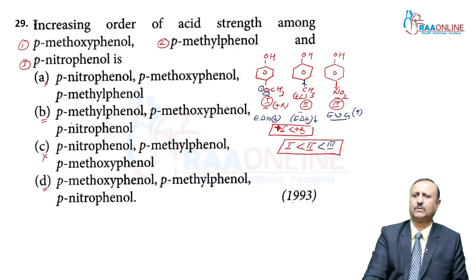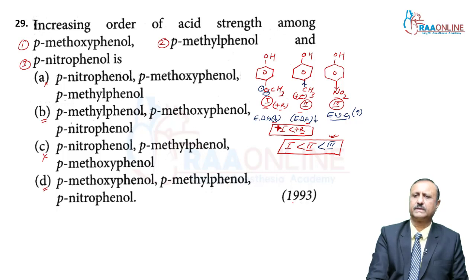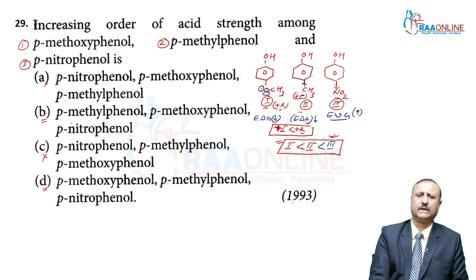Because the +R (resonating) effect of the –OCH₃ group is more predominant than the +I effect of the methyl group, –OCH₃ decreases acidity more strongly. So para-methylphenol is more acidic than para-methoxyphenol. The correct order has para-nitrophenol > phenol > para-methylphenol > para-methoxyphenol. This order is present in option D.